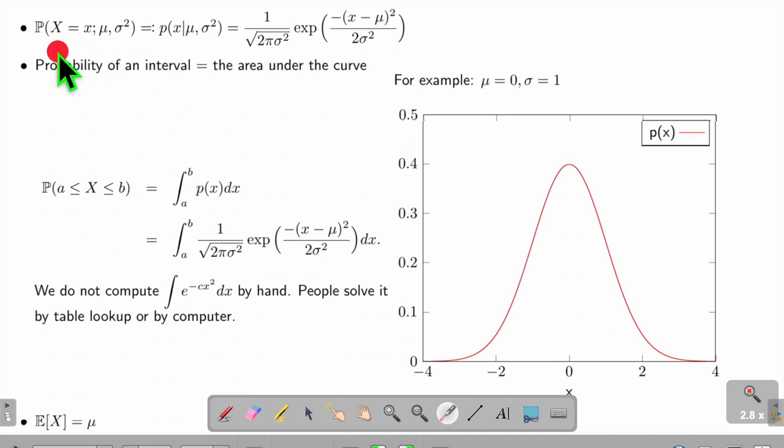This expression gives us the probability if X takes a specific value under the parameter μ, σ². Probability of an interval is the area under the curve. To find the probability of X between a and b, we compute this integral by multiplying this whole thing together and taking the integral on x from a to b. We do not compute this integral by hand; we solve it by table lookup or by computer.